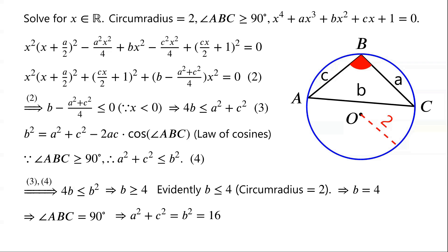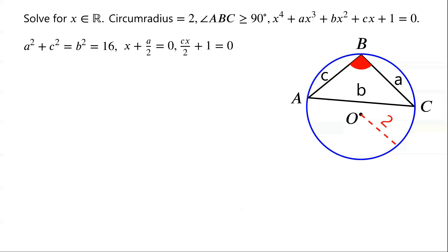This means that b minus (a squared plus c squared) over 4 is equal to 0. So equation 2 becomes the sum of two squares equals 0, which implies that each square must equal 0. So we have x plus a over 2 equals 0, and cx over 2 plus 1 equals 0. From x plus a over 2 equals 0, we have x equals negative a over 2. From cx over 2 plus 1 equals 0, we have x equals negative 2 over c. This gives ac equals 4.